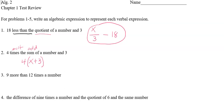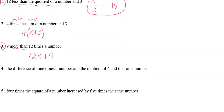Number three is a lot like number one. Notice up here we dealt with 'less than'; now we're dealing with 'more than.' That's like adding nine to something, and what we're adding nine to is 12 times a number. So here's 12 times a number, and then to show nine more than that, I do plus nine. That's my answer for number three.